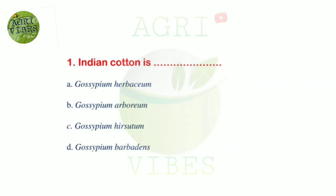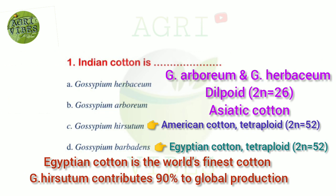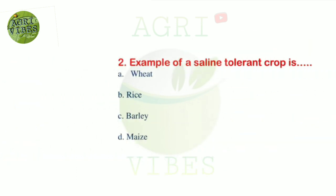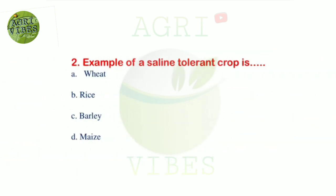Question number one: Indian cotton is — options: Gossypium herbaceum, Gossypium arboreum, Gossypium hirsutum, and Gossypium barbadense. Correct answer is option B, Gossypium arboreum. Gossypium herbaceum and Gossypium arboreum are the Asian species, and Gossypium hirsutum and Gossypium barbadense are the American species. Next question: example of a saline-tolerant crop is — options: wheat, rice, barley, and maize. Correct answer is option C, barley.